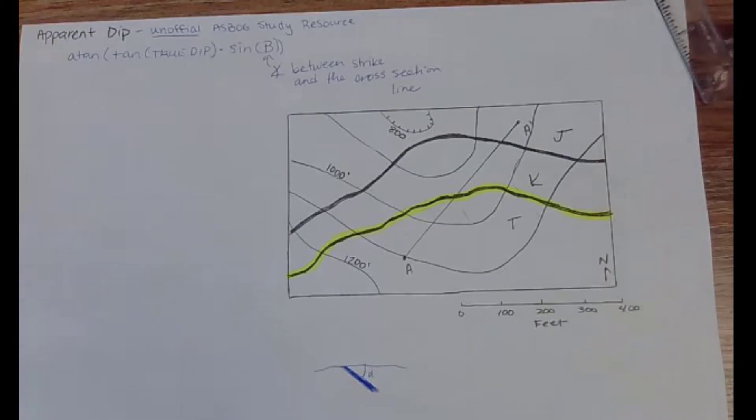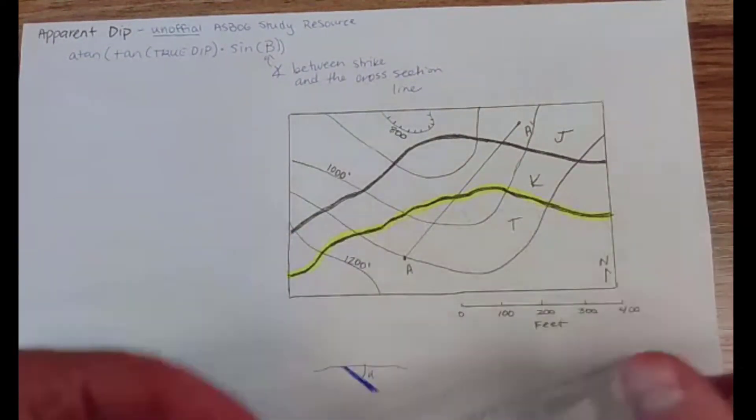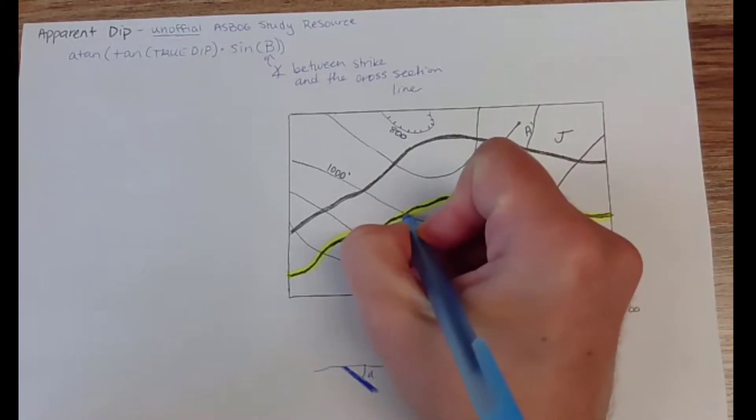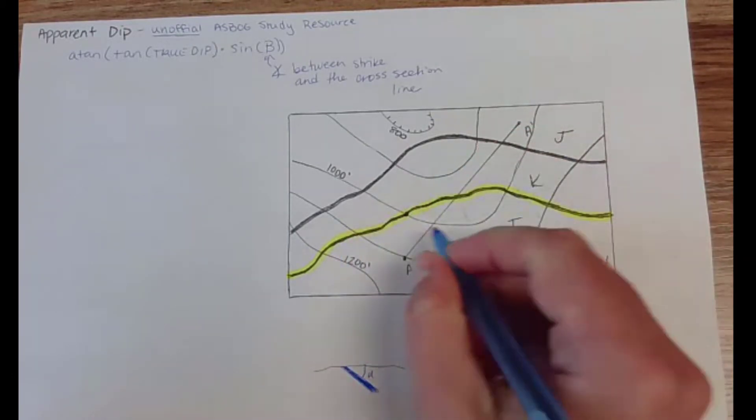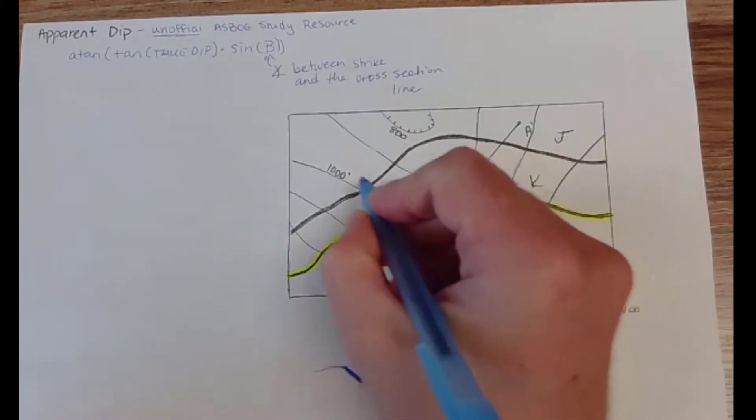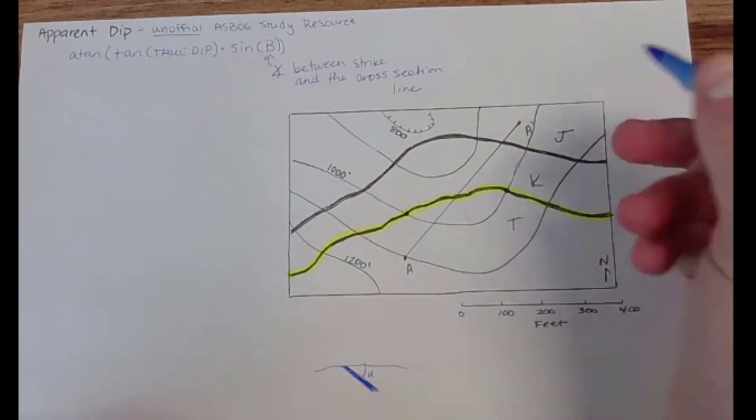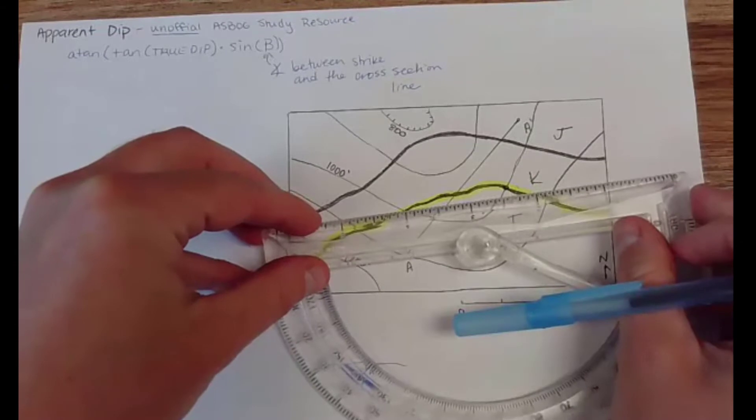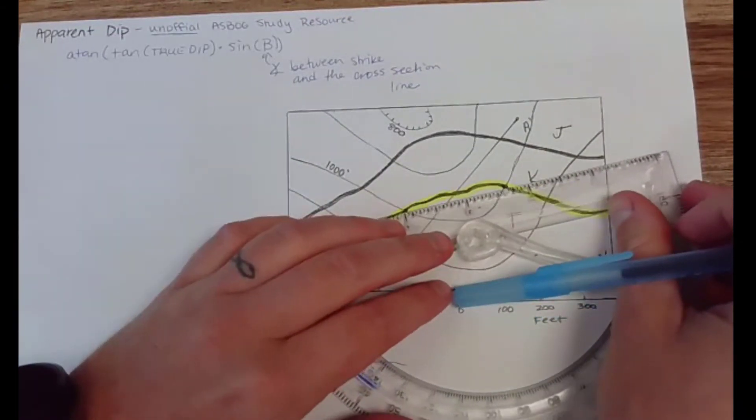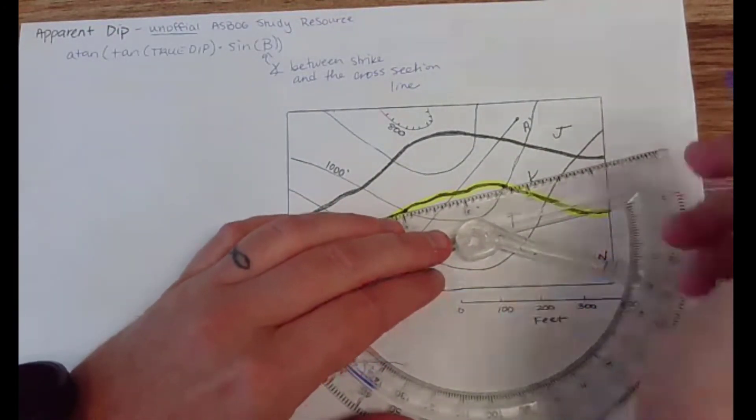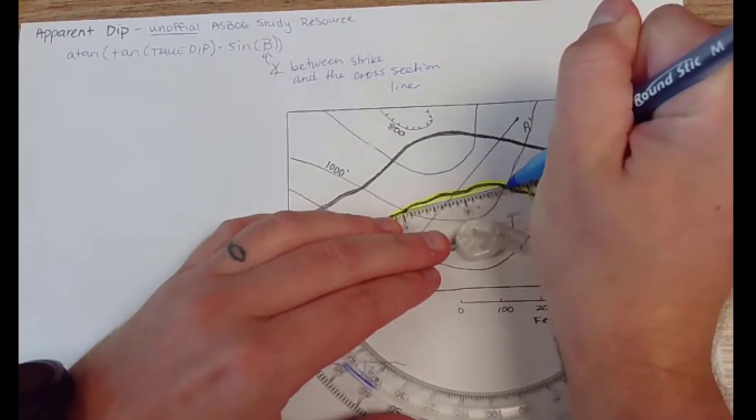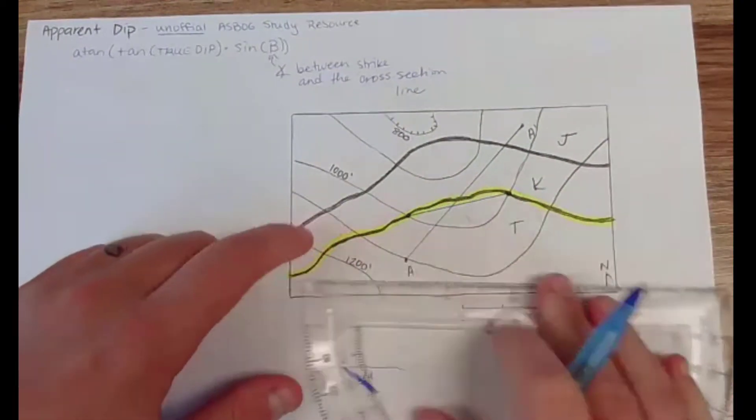So I'm gonna set up a quick little strike line problem. By doing this what I'm gonna do is find places where my contact intersects the same contour elevation twice, so I'm gonna go from 1000 to 1000 like this, and then I'm also gonna go from - looks like I'm going uphill because this is 1200 - 1100 to 1100.